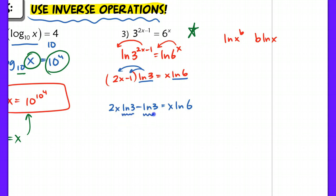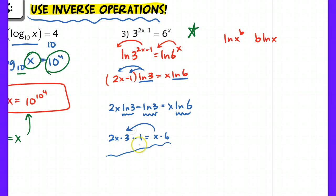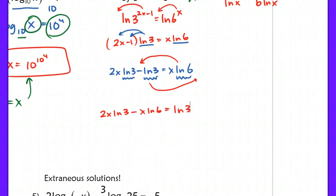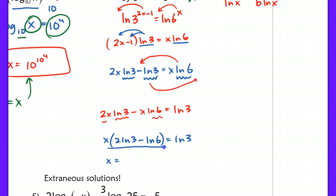This is actually just an easy linear equation — it just doesn't look easy right now. I collect x-terms to one side and move constants to the other. Then I factor out x, leaving x times the quantity 2 times the natural log of 3 minus the natural log of 6, equaling the natural log of 3. To isolate x, I divide both sides by that expression, giving x equals the natural log of 3 over the quantity 2 times the natural log of 3 minus the natural log of 6. That's my final answer.